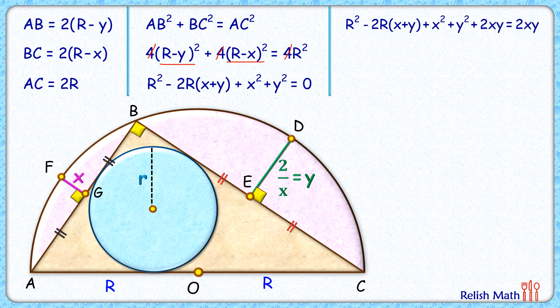Now adding this term plus 2xy, this will become (x + y)² and this full term will become formula for (A - B)². So LHS will become [R - (x + y)]² equals to 2xy.